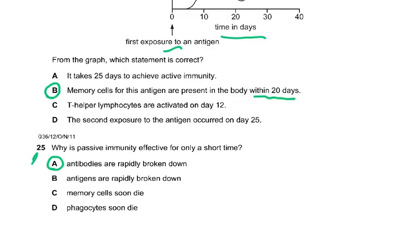Question 25: why is passive immunity effective for only a short time? Because the antibodies injected have not been made by the person's own lymphocytes, so they will be considered non-self and broken down by white blood cells. No plasma cells and memory cells have been formed — just ready-made antibodies have been injected, either from mother to fetus or artificially, like in the tetanus vaccine where tetanus antibodies are given to attach to and destroy the bacteria if it enters.